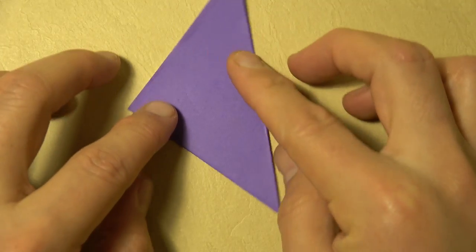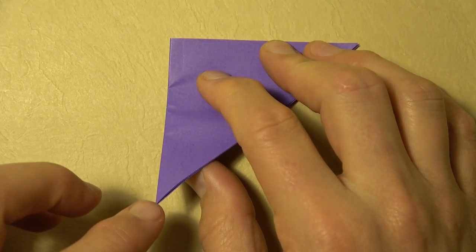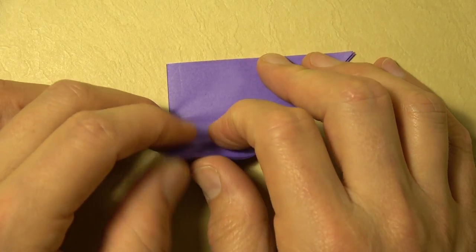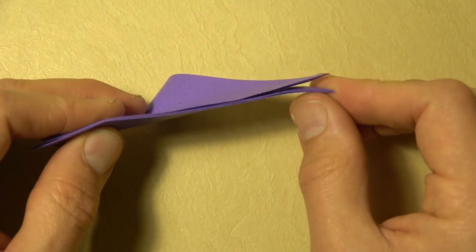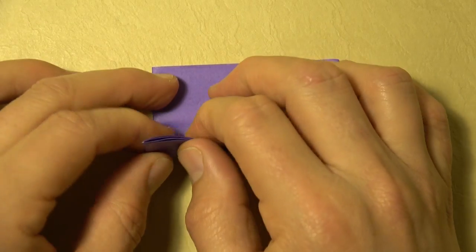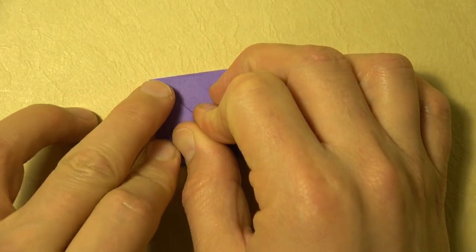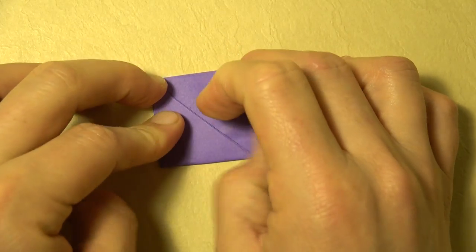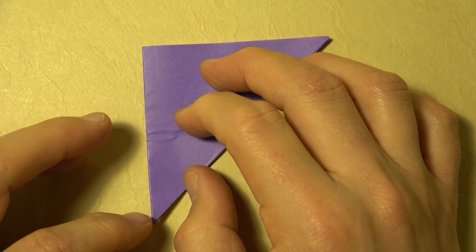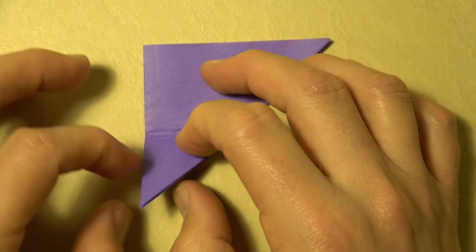Okay, now let's rotate and now let's fold this corner to here. We're folding the single corner, not the length. Now let's fold in half. Now let's fold the corner to the crease that we just made.